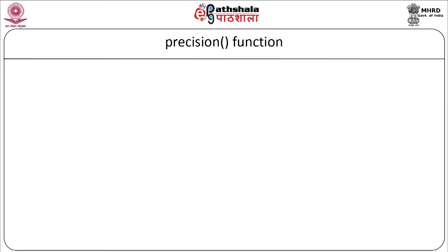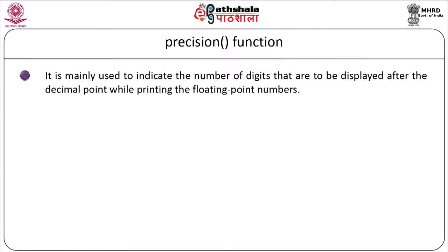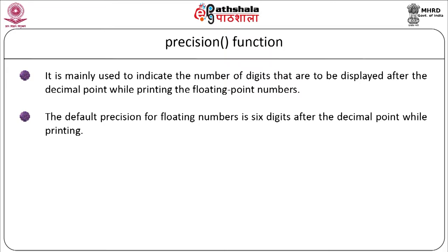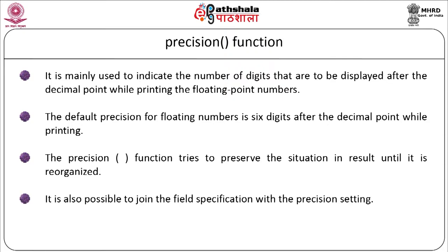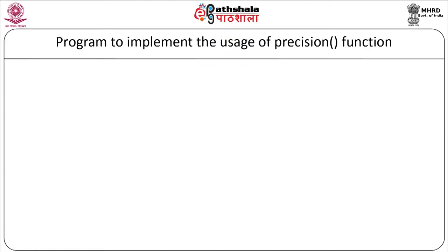The next function is precision. It is mainly used to indicate the number of digits to be displayed after the decimal point when printing floating point numbers. The default precision for floating point numbers is 6 digits after the decimal point. The precision function preserves its setting until it is reorganized. It is also possible to combine field specification with precision setting. The syntax is: cout.precision(d), where d is the number of digits to the right of the decimal point.